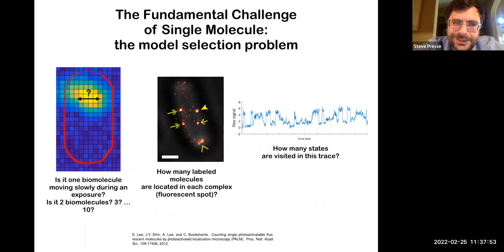Determining models is absolutely critical to us in single molecule. I would even argue that the fundamental challenge of all of single molecule biophysics is the model selection problem. And I give you examples of a model selection problem here. On the left hand side, painted sort of in a red line with a red contour, it's sort of the contour of a fictitious pseudo E. coli, and we're asking the question, within this exposure, within the single camera exposure, is it one biomolecule moving? Is it two? Is it three? In the middle, how many biomolecular actors are contained within that individual fluorescent spot? And on the right hand side, how many states are visited, for example, in this trace? It could be force spectroscopy, it could be a FRET efficiency trace, it could be an ion patch clamp experiment. Those are all fundamentally model selection problems.